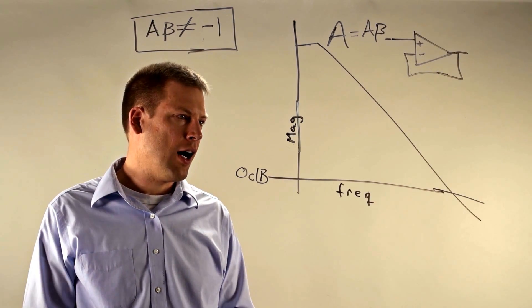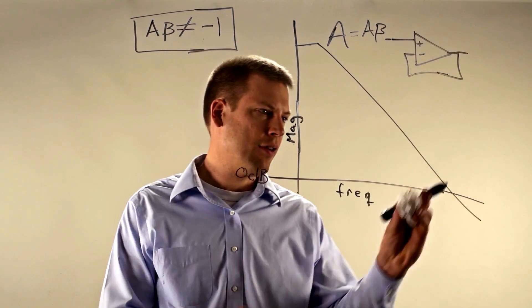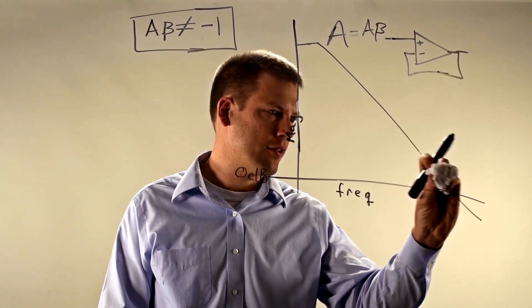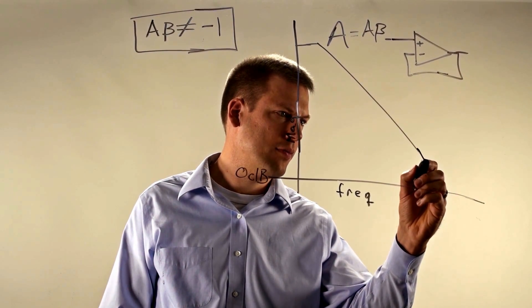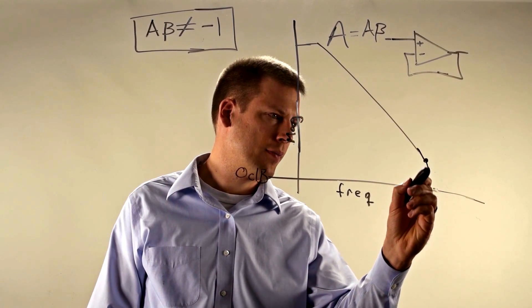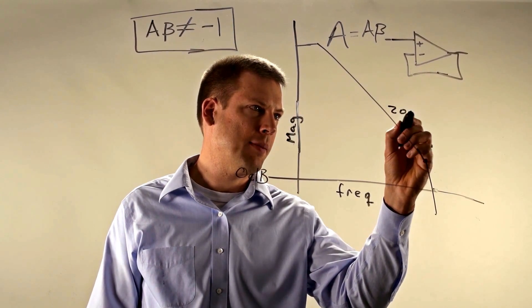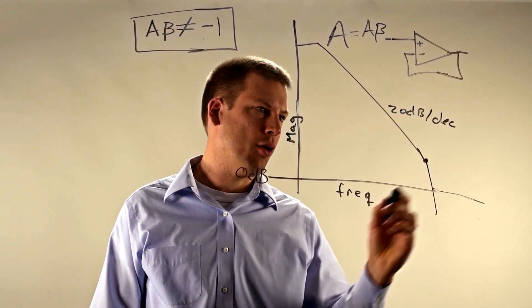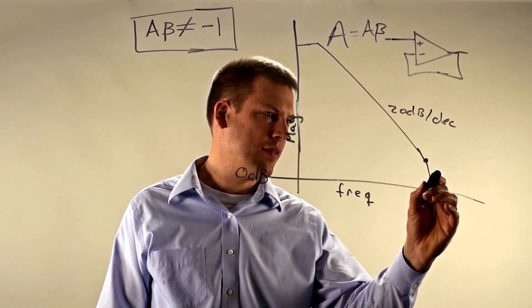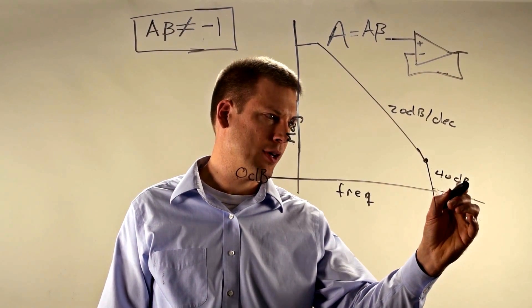However, there are op amps on the market that have a response that looks more like this where there's a second pole in the response and so you have 20 dB per decade through most of the open loop gain graph and then down here you might have 40 dB per decade.